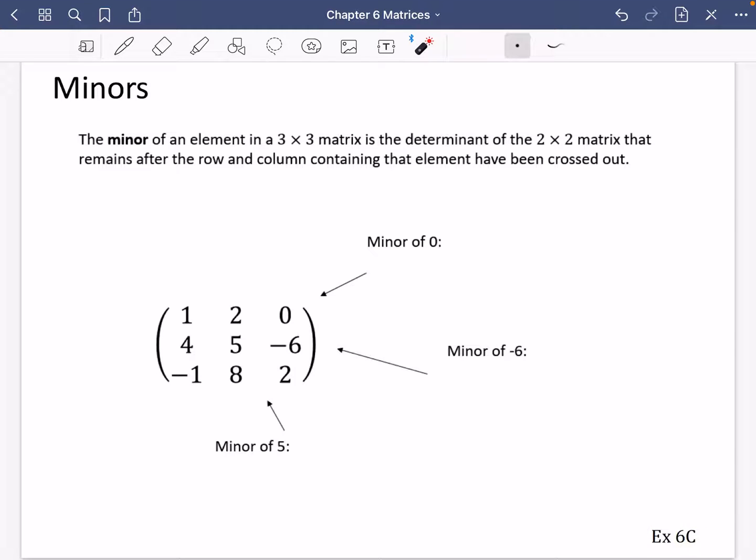Okay, so before you can do exercise 6C, you also need to know about something called the minors of a matrix. The minor of an element—remember, an element is just a number—in a 3×3 matrix is the determinant of the 2×2 matrix that remains after the row and column containing that element have been crossed out.